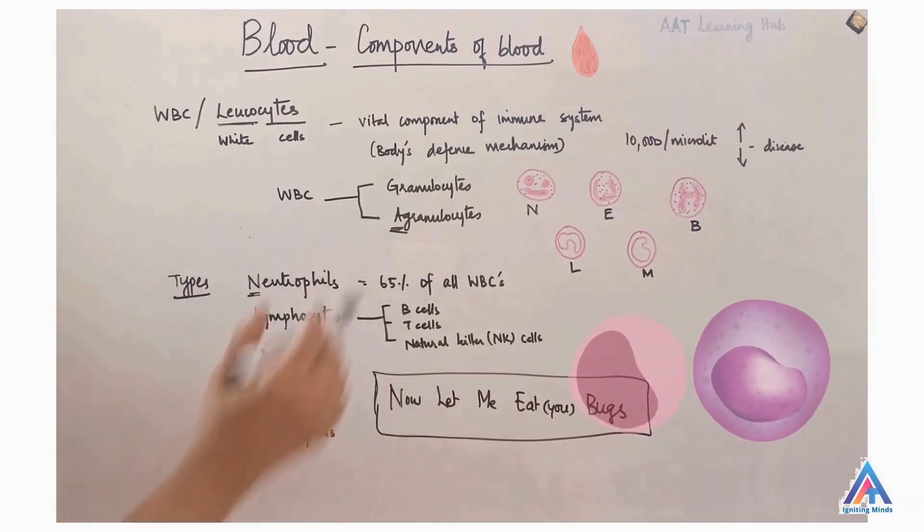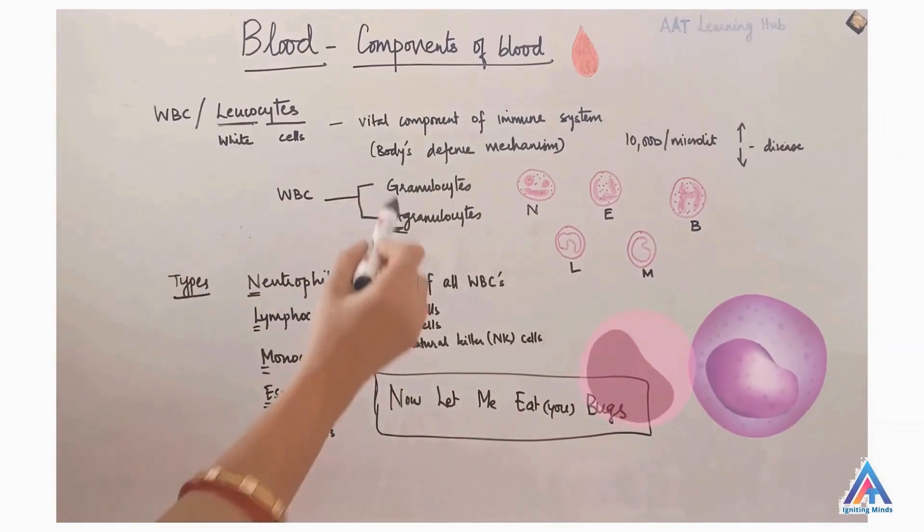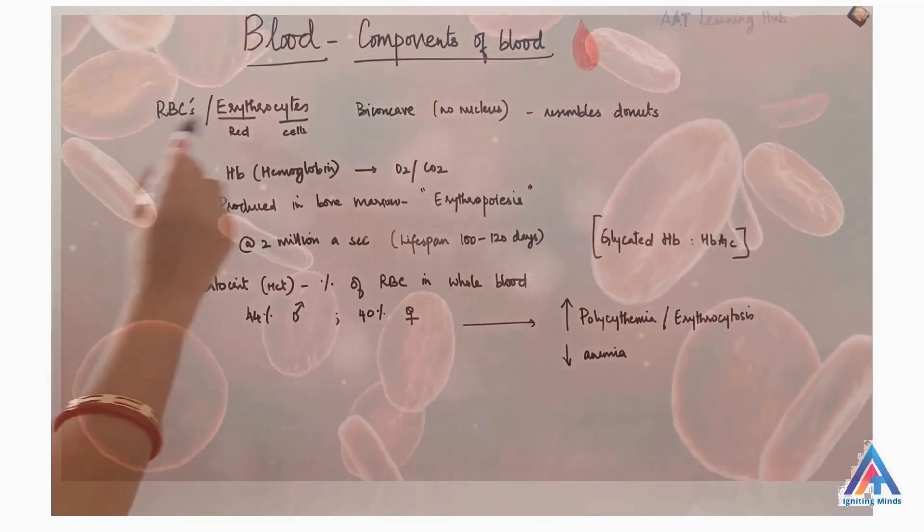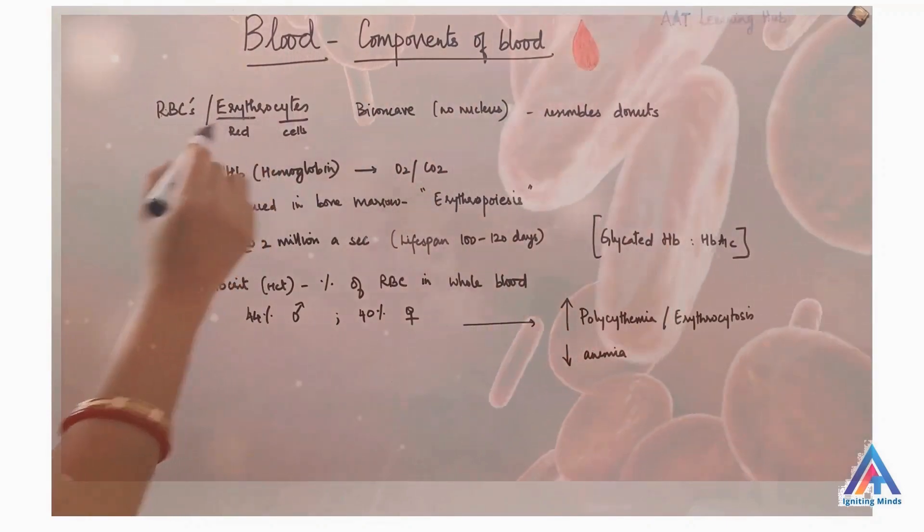Now, a fact about WBC. Contrary to the name, they appear light purple to pink under the microscope. The last is the red blood cells or erythrocytes.